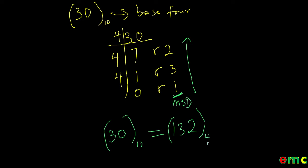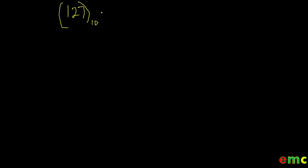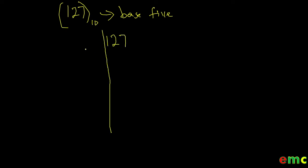132 in base 4 — very simple. Let's do another example: convert 127 in base 10 to a number in base 5. Don't forget to give this video a thumbs up and click on the subscribe button. To convert 127 to base 5, we continuously divide our 127 by 5.